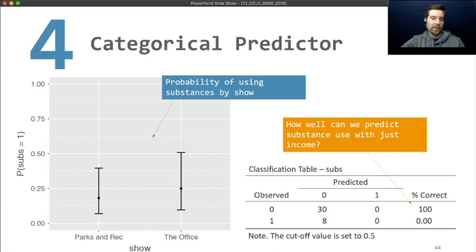We also can get the predicted probabilities of using substances here. And what we can see is the predicted probability for parks and rec was somewhere around 20%. And for the office, it's about 25%. However, when we come here, when we look at the predicted values, our model never predicts that any of the groups will use substances. Instead, it predicts everyone won't. And this can happen sometimes when your outcome, whatever you're trying to predict, is really unlikely. So using substances in this dataset wasn't super likely. So it's 100% correct on predicting those that didn't use substances, but it was 0% correct for those that did.